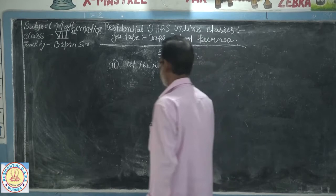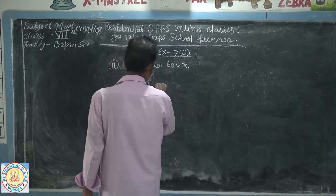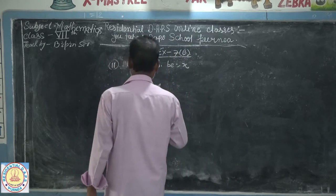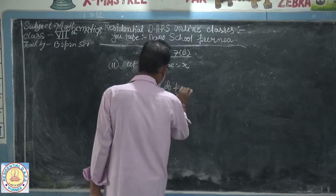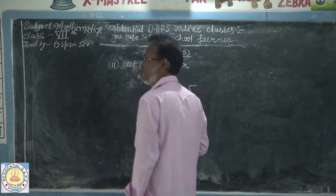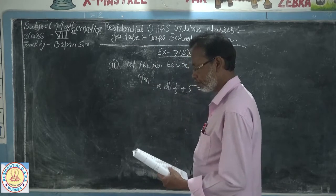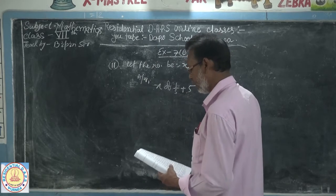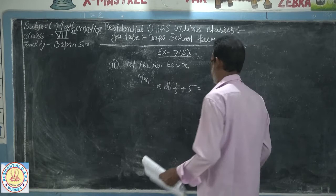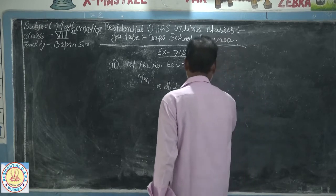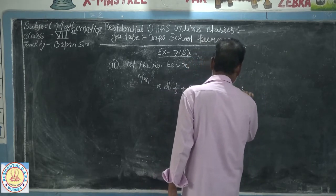Let the number be x. Then according to the question, the 5th part of a number is x multiplied by 1 by 5, increased means plus 5, is equal to its 4th part, that means x multiplied by 1 by 4, decreased by 5.